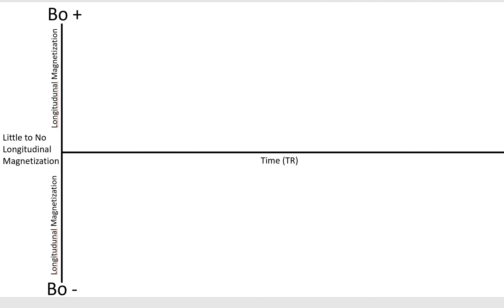On the y-axis, we see either positive B0 or negative B0. That is the direction of the main magnetic field, and that's the direction that T1 recovery takes place. Only things that have a positive or negative amount of T1 recovery can be manipulated by inversion pulses or excitation pulses. Excitation pulses and inversion pulses only affect things that have either a positive or negative amount of longitudinal magnetization.